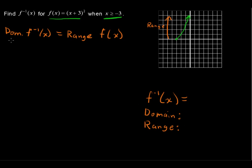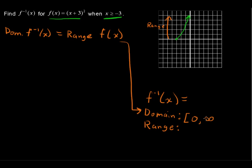So if the domain of the inverse is the range of the original, I'm going to put this down: the domain of the inverse includes 0, and then increases without bound. We can't say to infinity — it just increases without bound.